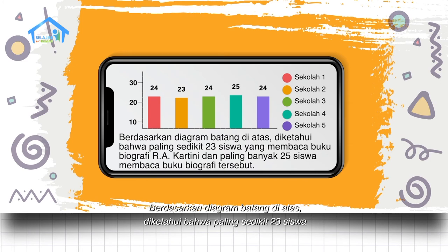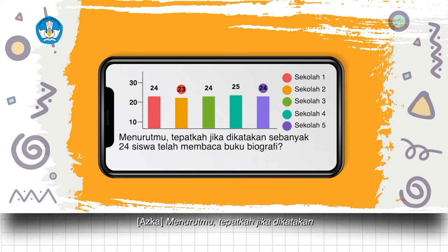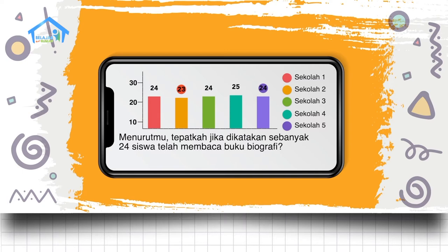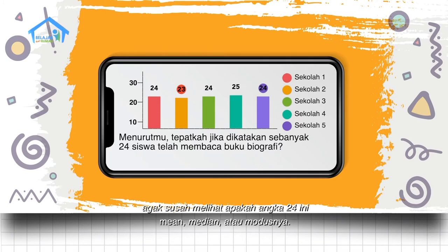Berdasarkan diagram batang di atas, diketahui bahwa paling sedikit 23 siswa yang membaca buku biografi Raden Ajeng Kartini, dan paling banyak 25 siswa membaca buku biografi tersebut. Menurutmu, tepatkah jika dikatakan sebanyak 24 siswa telah membaca buku biografi? Dari data tersebut, baik min, median, maupun modusnya adalah 24. Jadi agak susah melihat apakah angka 24 ini min, median, atau modusnya.